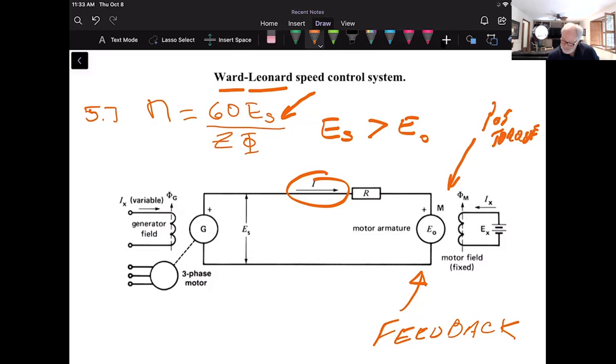Now suppose that we do this: suppose that we reduce E sub S. Let's suppose we're reducing E sub S by reducing the generator excitation, this guy. Okay, so we're decreasing this by lowering the flux. As soon as E sub S becomes less than E sub O, then this current now is actually going to change directions, and we can think of it now going in this direction. So the current reverses. Well, what happens in that case when the current reverses? We have to think that the torque also reverses.